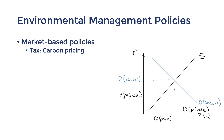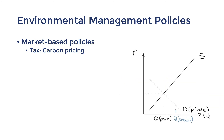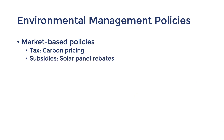Subsidies are used to promote merit goods, which are goods where the environmental benefits are not taken into account by the private sector. With merit goods, the social demand curve sits further out than the private demand curve. This curve illustrates that in an ideal world, consumers would be willing to pay a higher price and consume a higher quantity. But since they're not, subsidies are used to shift the supply curve to the right to boost the quantity sold. Solar panel rebates are an example of subsidies for a positive environmental outcome, increasing the uptake for solar panels and helping Australia achieve its renewable energy target.